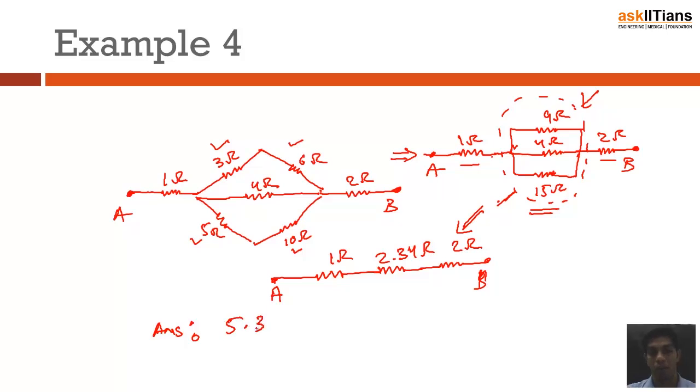Now the final answer will be simply the addition of 1 ohm, 2.34 ohm, and 2 ohm. So the final answer comes out to be 5.34 ohm. So this is how you actually solve a problem based on series and parallel connection.